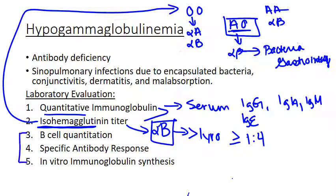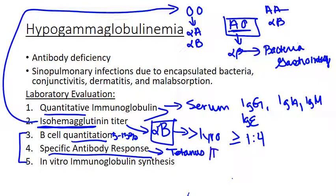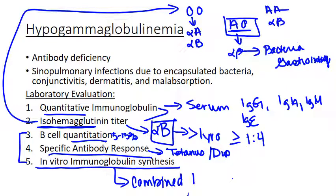You also have some definitive tests. A B-cell quantitation measures circulating B-cells by number — normally done by flow cytometry — with normal values of about 5 to 15% of total lymphocytes. A specific antibody measurement measures for an increase in antibody following vaccination with protein antigens like tetanus or diphtheria, or polysaccharide antigens like pneumococcal vaccine. You can also do in vitro immunoglobulin synthesis, which is more of a research technique studying T helper and regulatory effects on B-cell function, and would be more important if you were worried about a combined immunodeficiency.